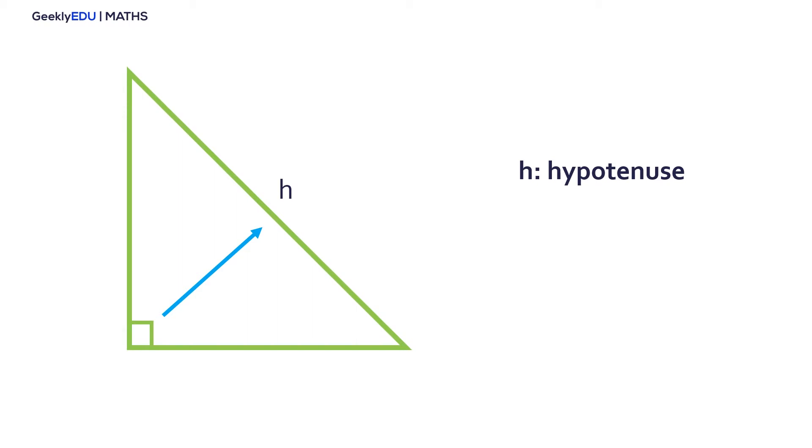Now, we have to choose an angle of reference. In this case, it's theta, and the side that is in front of the angle of reference is the opposite side. Let's name it OP. And the side that is between the angle of reference and the 90-degree angle is the adjacent angle.